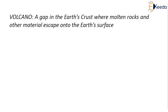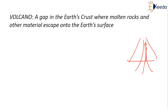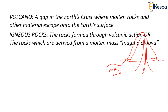Coming to the volcano — what do you mean by a volcano? It is nothing but a gap; a jet-like structure will be there in the earth's crust where molten rocks and other materials will try to escape outside the surface of the earth. They want to escape from the interior to the exterior. So what are igneous rocks? They are the rocks which are formed through this volcanic action, or the rocks which are derived from this molten mass — magma or lava — as already discussed.